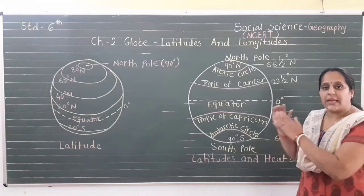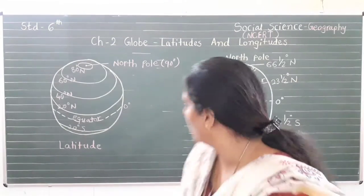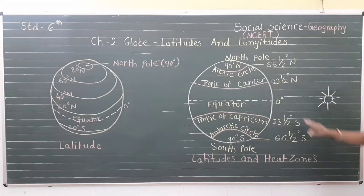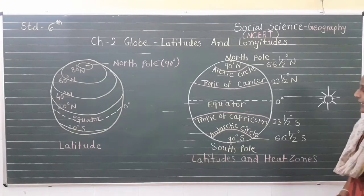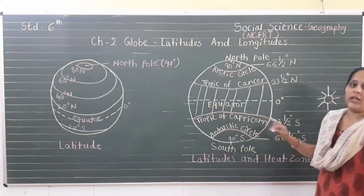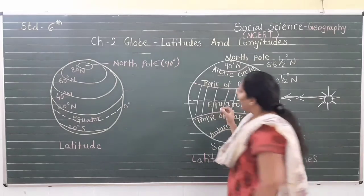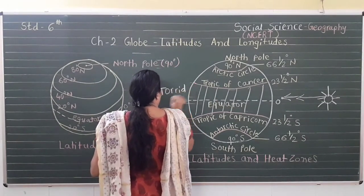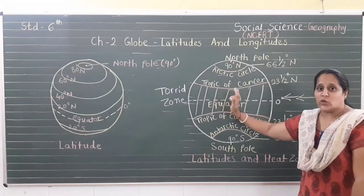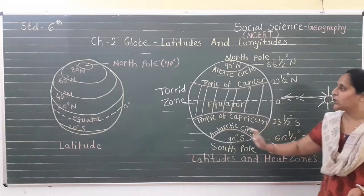These parallel lines indicate different locations and different heat zones. Why do we call it a heat zone? Because here we get direct sun heat. Between the Tropic of Cancer and the Tropic of Capricorn, this part gets direct heat from the sun. That is why this part is called the Torrid zone — it is a very hot atmosphere because they receive direct sunlight.